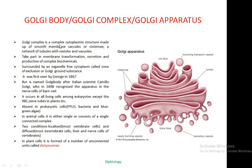The Golgi Complex is a complex cytoplasmic structure made up of smooth membranes, vesicles or cisternae, and a network of tubules with vesicles and vacuoles. It takes part in transformation, secretion, and production of complex biomolecules. It is surrounded by an organelle-free cytoplasmic region called the zone of exclusion or Golgi ground substance.